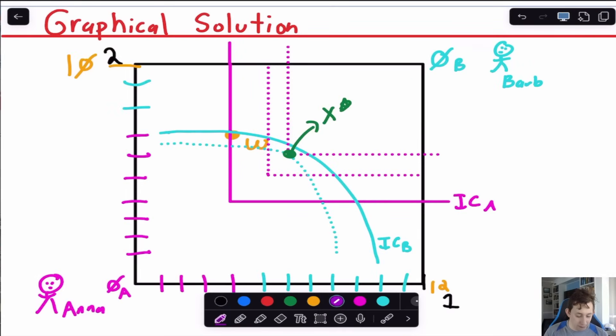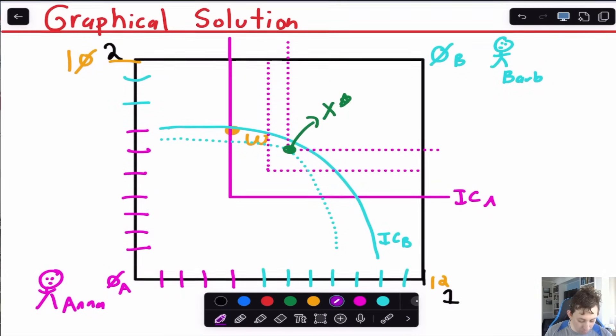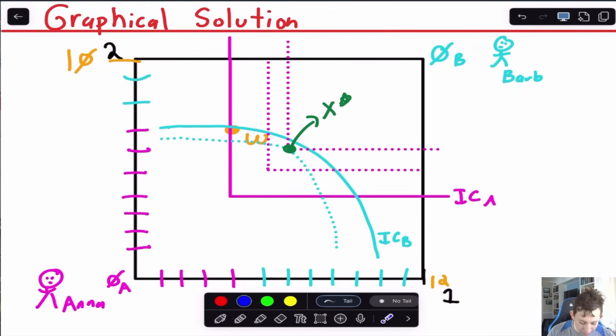Now if I think about the graphical solution to find the Pareto optimal point, we would just keep finding Pareto improvements all the way until we got to our X star, or to the point at which we couldn't make anyone better without making anyone worse. So maybe for this case, it's this green dot X star, where both Anna and Barb are better off than what they started at. And again, X equals Y for both those people.